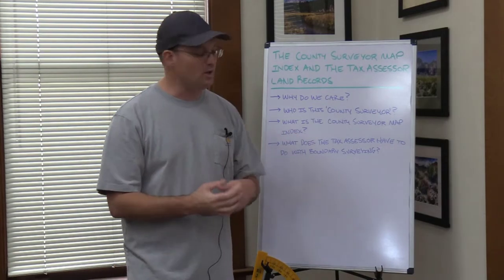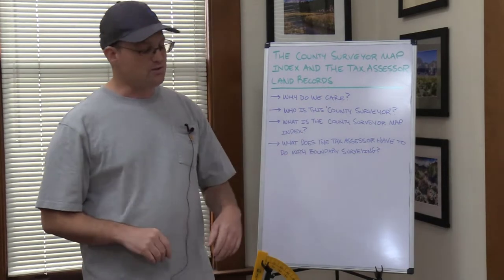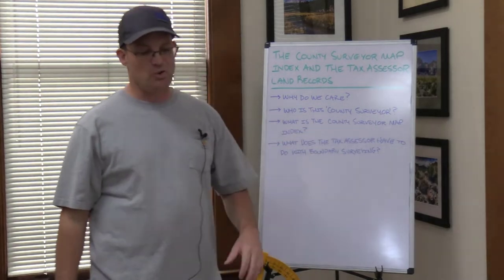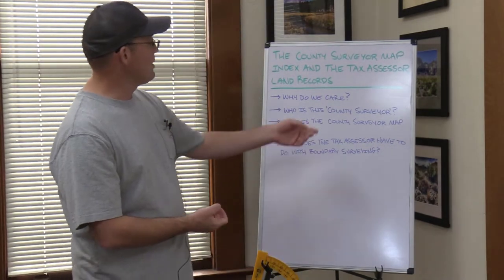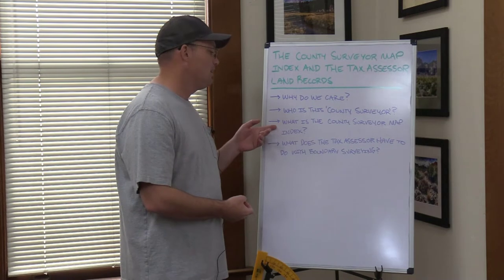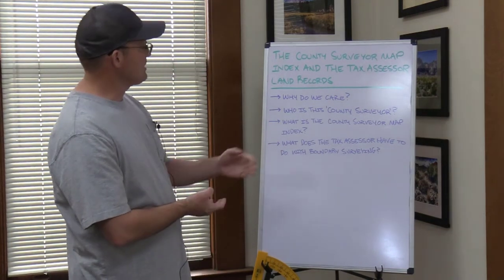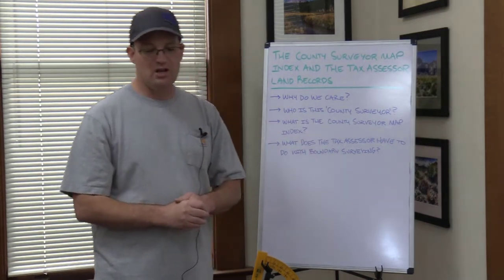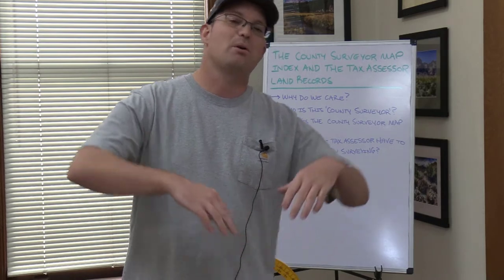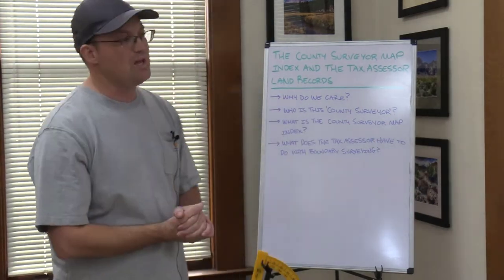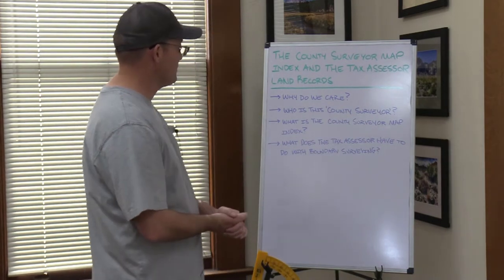I'll do another video and talk about two or three different kinds of county surveyor map indexes, because there are different ways this can be done and every county is a little bit different. So that's what the county surveyor map index is. Anytime you're doing a boundary survey, you should pull all of the available surveys — not only for your parcel but for neighboring parcels. Any maps that fall into your resolve boundary matrix, you want to pull those.